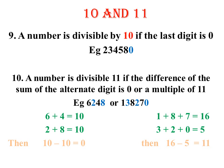For the second example, the alternate numbers are 1, 8, and 7 — if you add them, you get 16. And the other alternate numbers are 3, 2, and 0 — if you add them, you get 5. So if you find the difference, you get 11. Therefore this number is also divisible by 11.